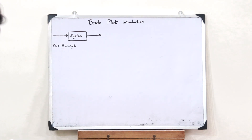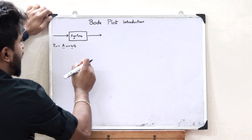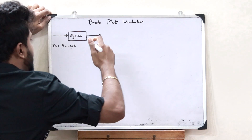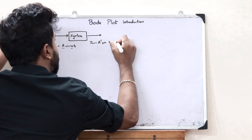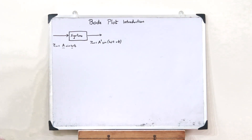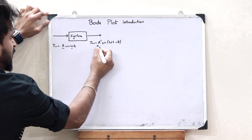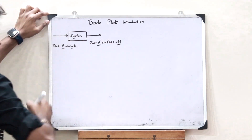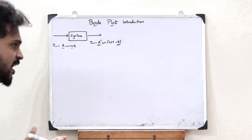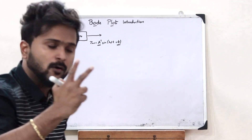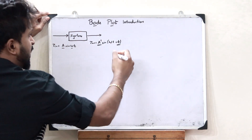In the case of a Bode plot, what we do is change this particular frequency. When we change the frequency, what we observe is that we get an output signal given as A' sin(ωt + φ). When we change the frequency value, the value of the amplitude changes and there is an extra phase. Using a Bode plot, we plot two graphs: one for the gain, signified by this particular amplitude change, and the other for the phase.